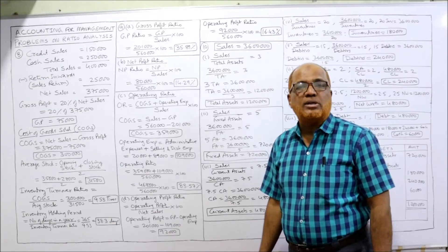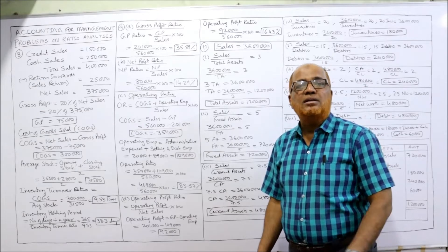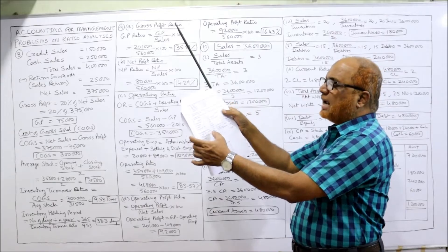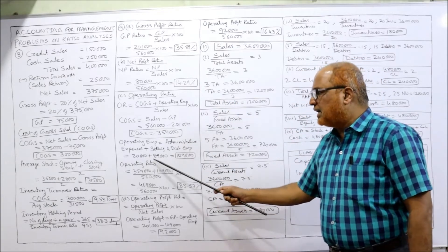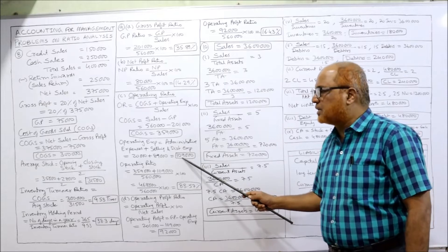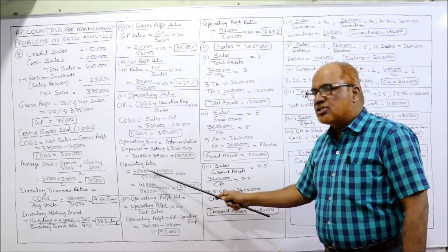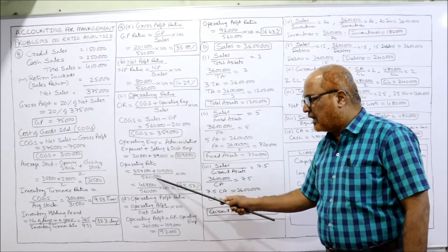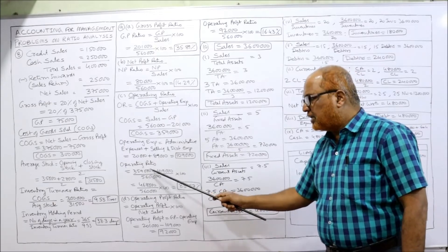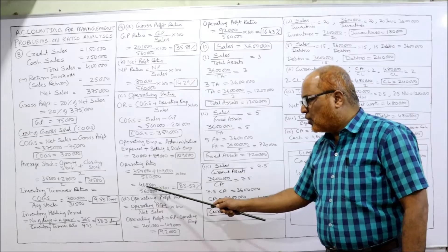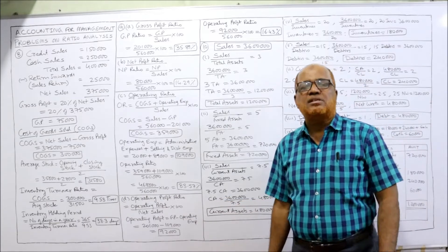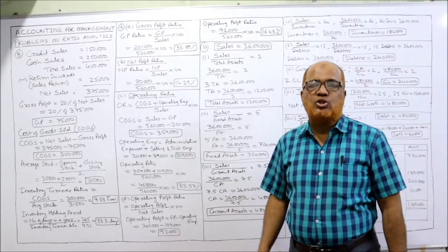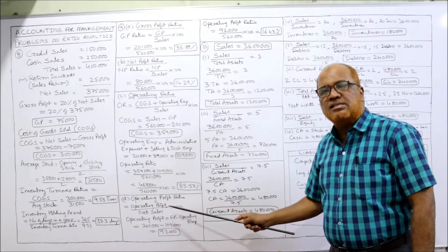Operating expenses means office and administration expenses plus selling and distribution expenses. Administrative expenses are 20,000 and selling and distribution expenses are 89,000, so operating expenses total 1,09,000. Operating ratio: COGS 3,59,000 plus operating expenses 1,09,000 divided by 5,60,000 into 100. Adding 359 plus 109 gives 468. So 468 divided by 560 into 100 equals 83.57%.